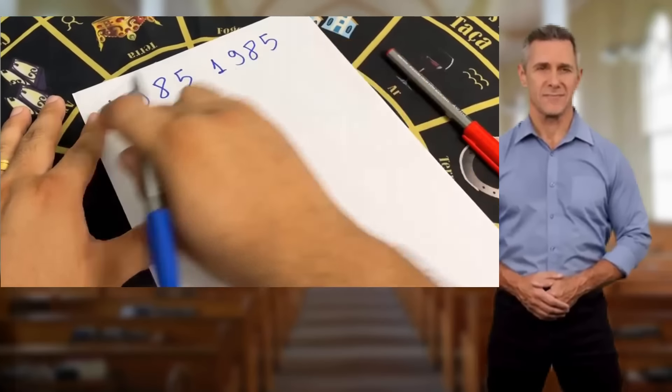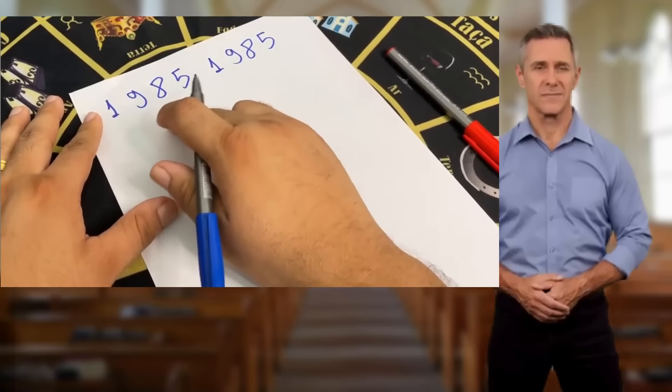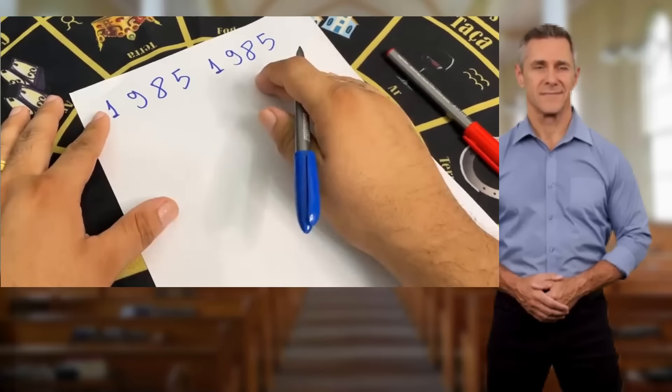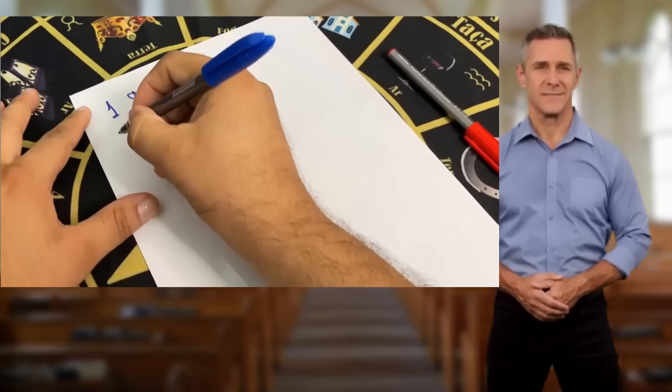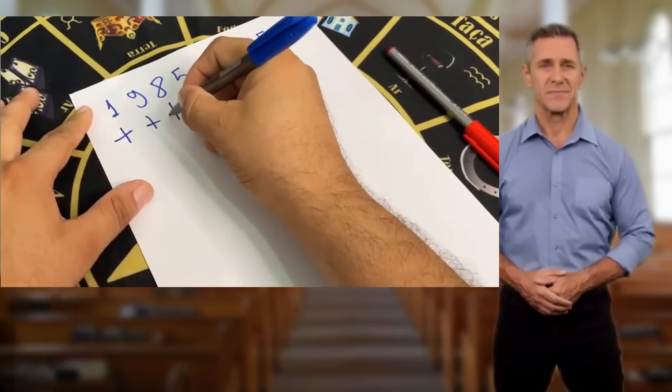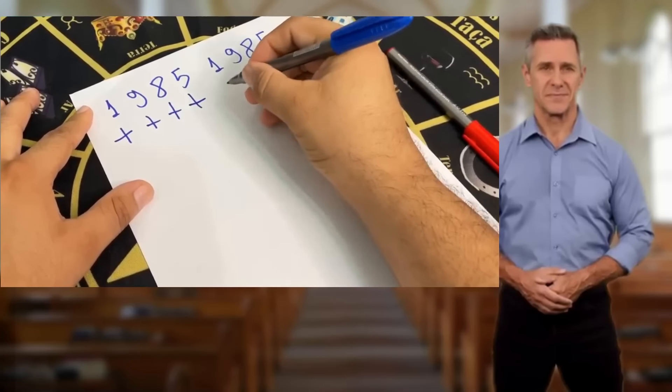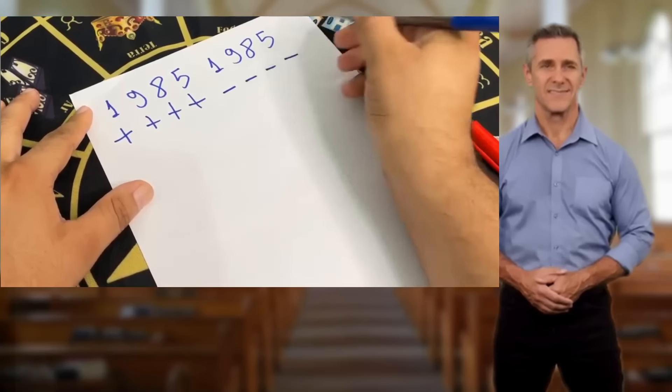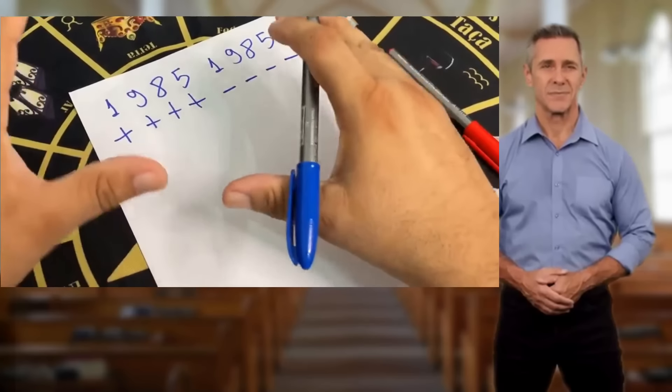Alright, now let's move forward. We have our year of birth written here. You will put your year of birth in this column. Now, below it, we will put plus and minus signs. The plus sign represents positive energies, and the minus sign represents negative energies. This balance of energies in our numbers is important.